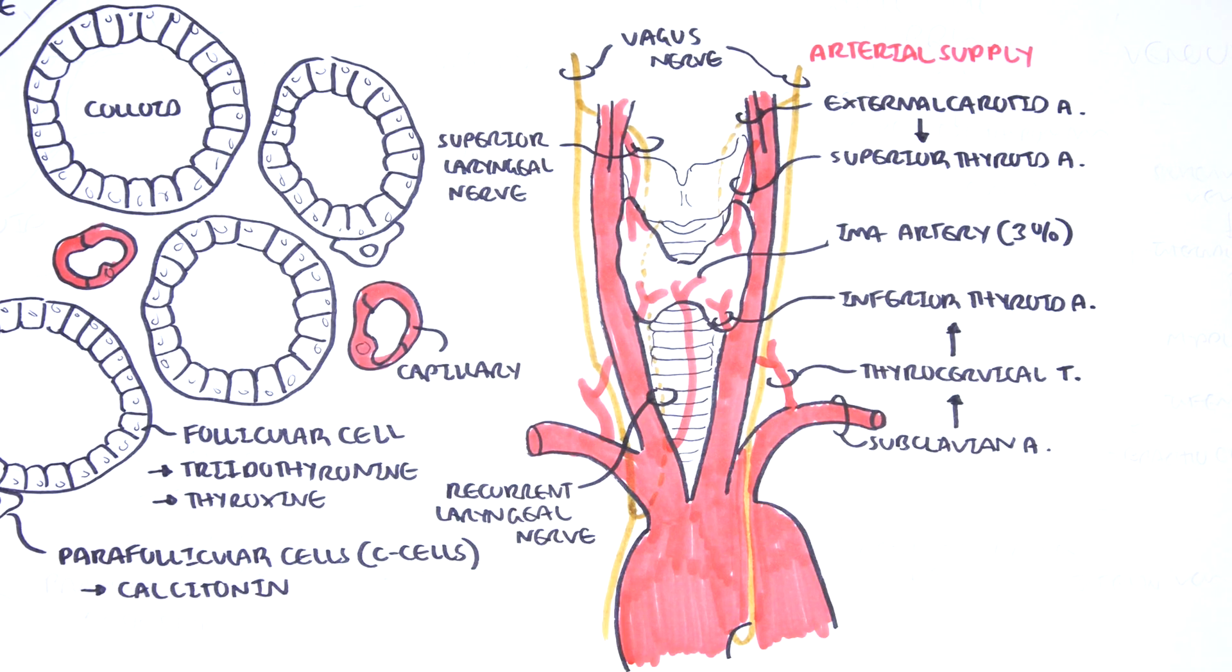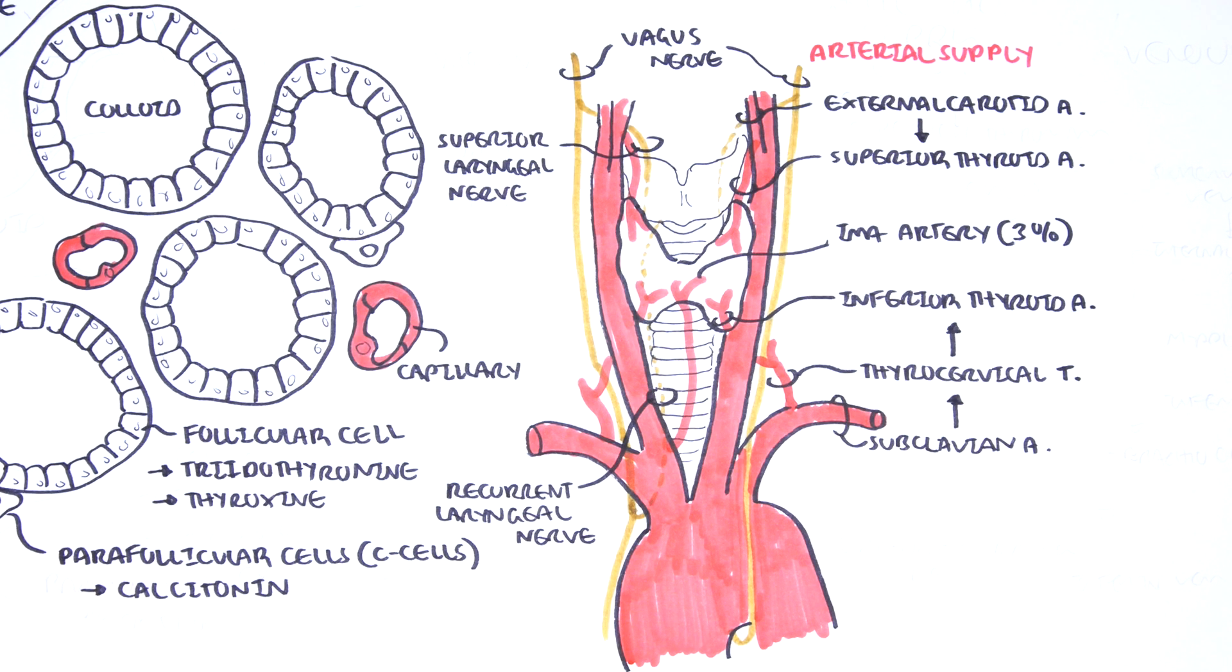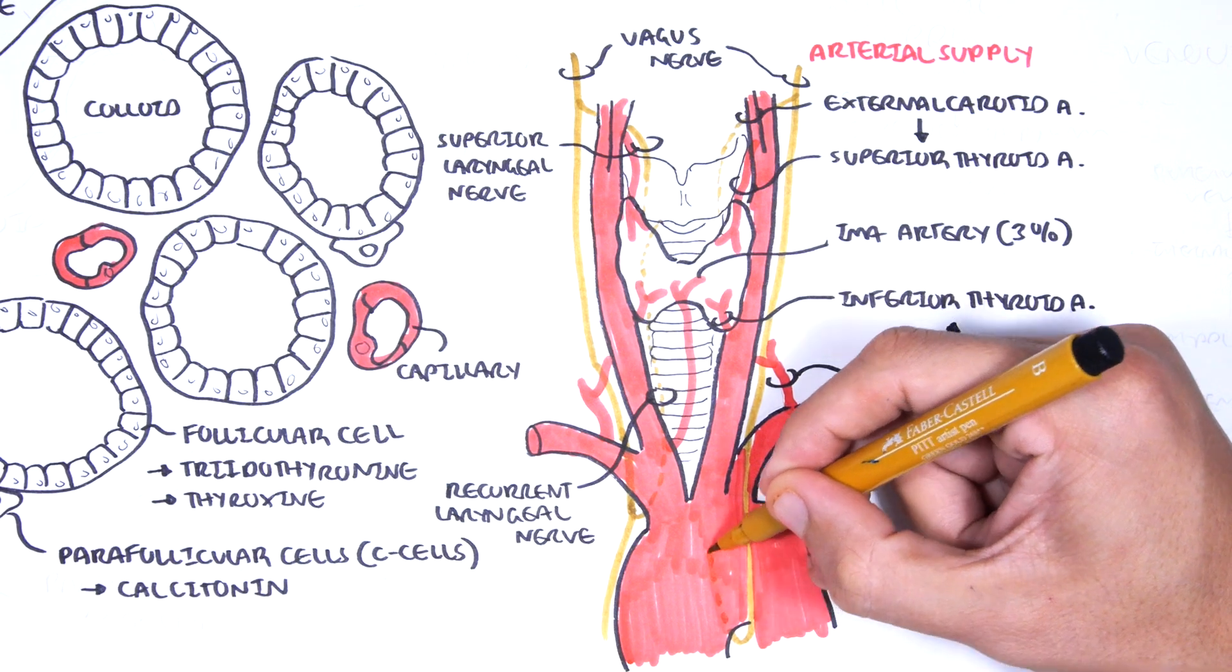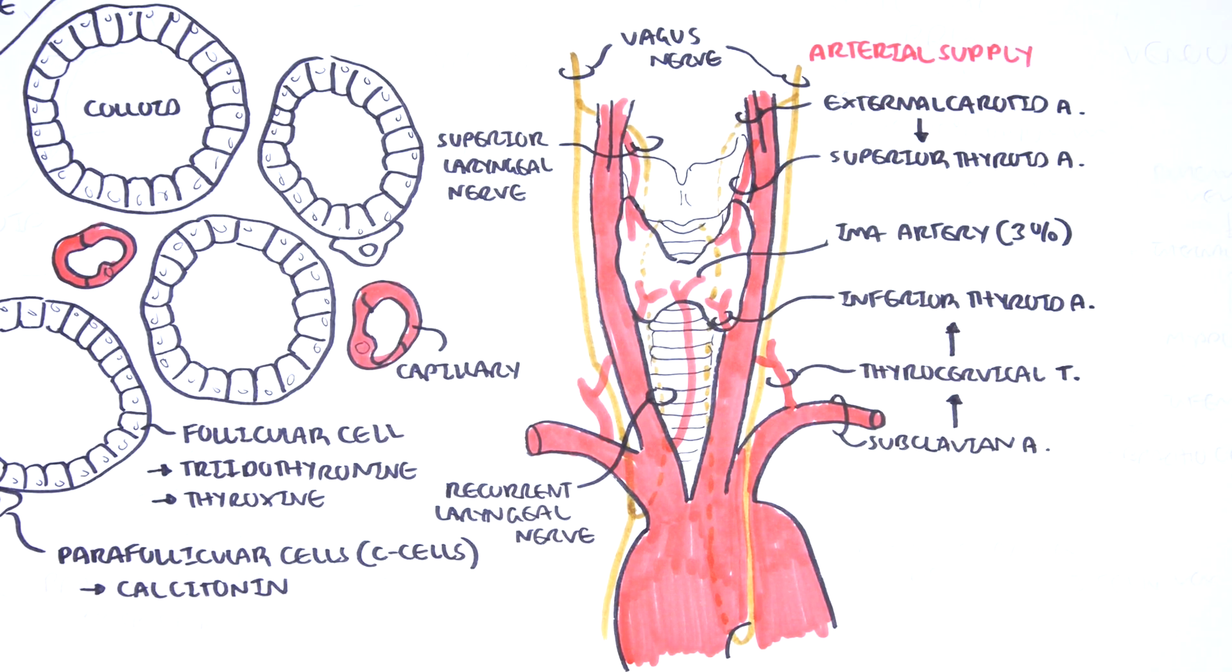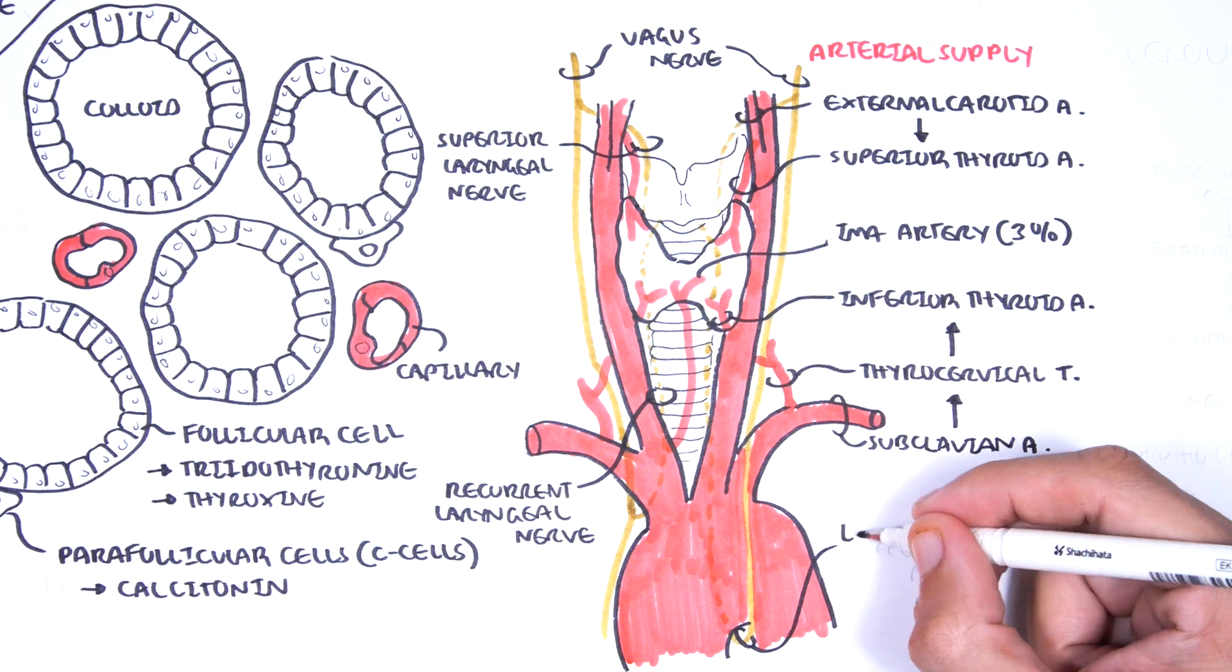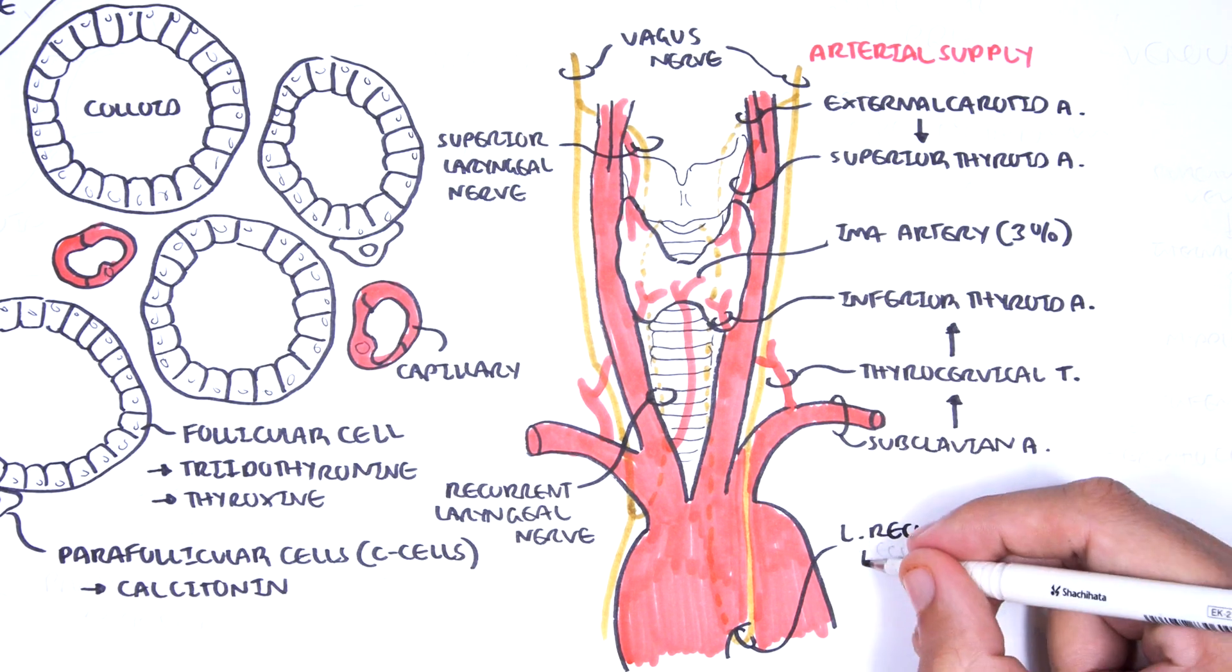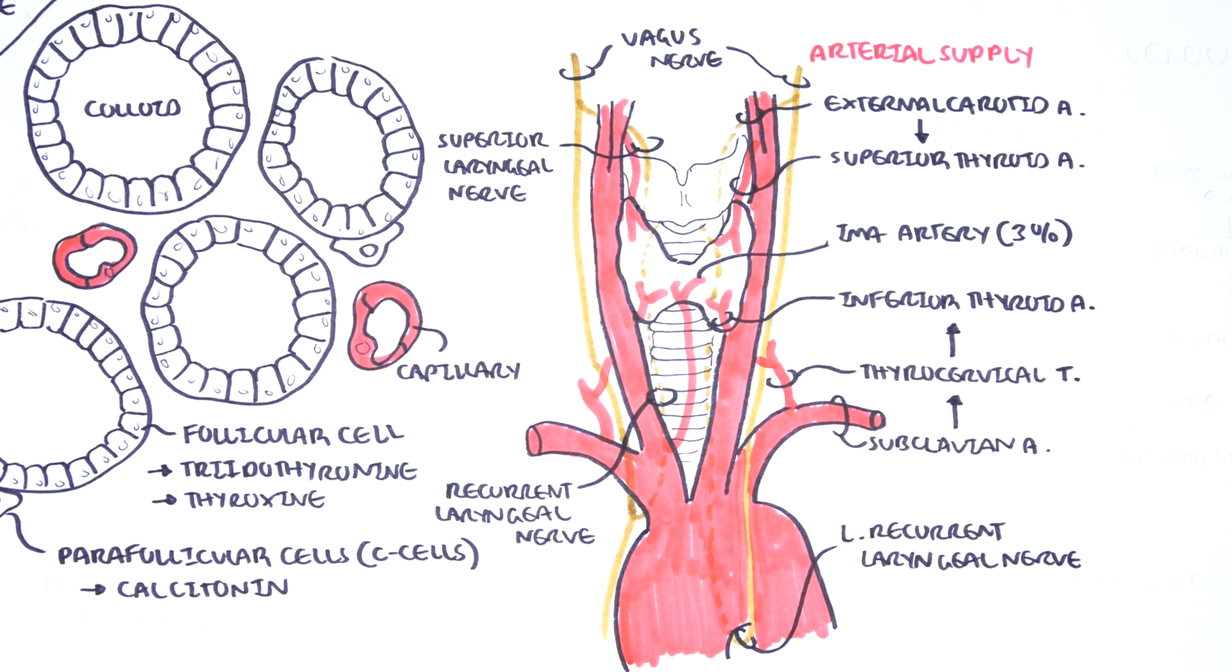After giving off the left superior laryngeal nerve, the left vagus nerve continues down and gives off another branch, the left recurrent laryngeal nerve which loops under the aortic arch and travels back up supplying the thyroid gland but mainly supplying the laryngeal muscles.